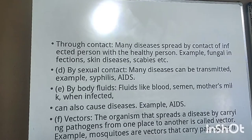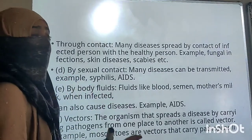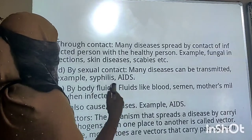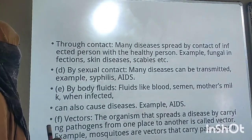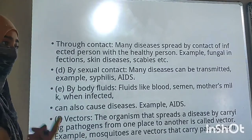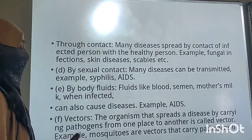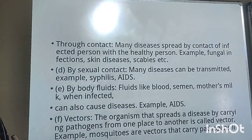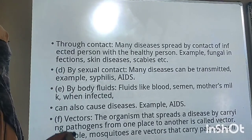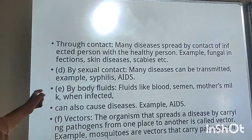Next is through contact. Many diseases spread by contact of an infected person with a healthy person — if an infected person comes into contact with a healthy person, the disease can transfer. Examples include skin diseases and fungal infections. Then there is sexual contact and body fluids — diseases like syphilis and AIDS spread this way. Body fluids like blood, semen, and mother's milk from an infected person can also transmit disease; AIDS is an example.